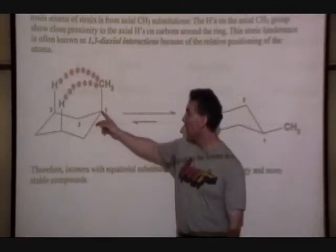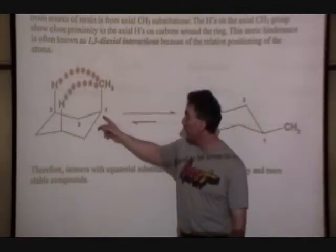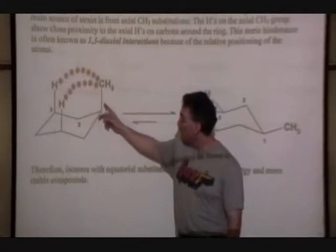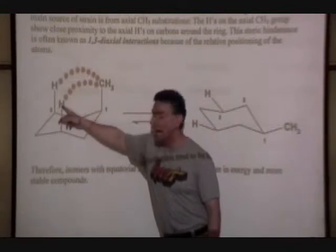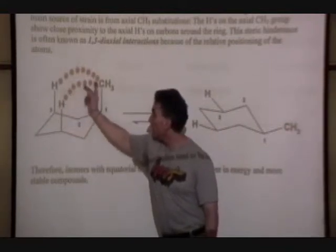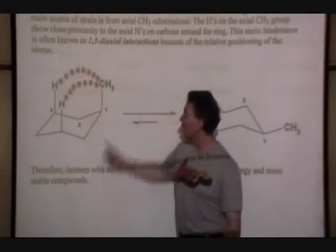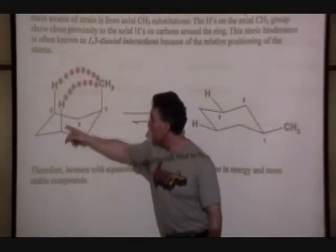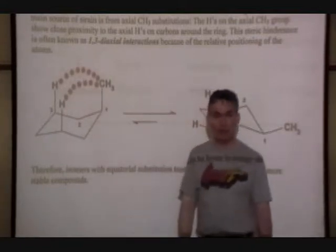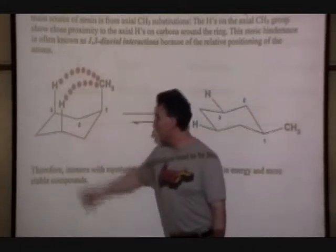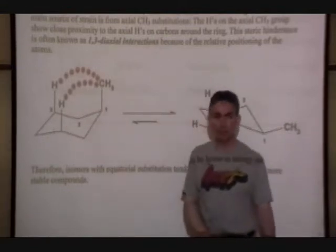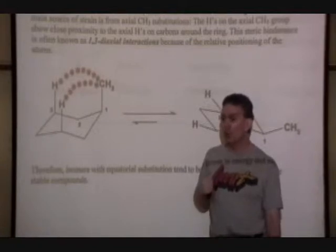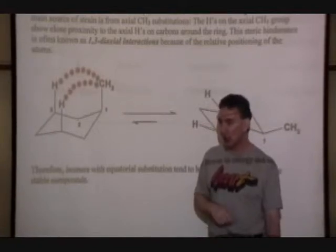From the first carbon where the CH3 group is protruding off, we count one, two, three carbons around the ring to the next axial position on the same side of the ring. This is where the steric interaction is coming from. So we call it a 1,3-diaxial interaction. First and third carbon, they're both axial, so they're diaxial interactions. Hence we call it a 1,3-diaxial interaction.